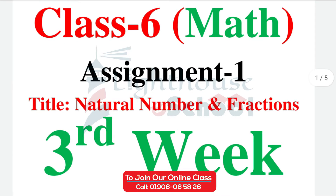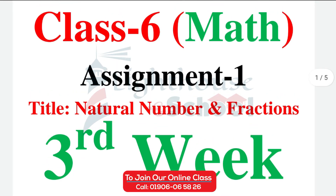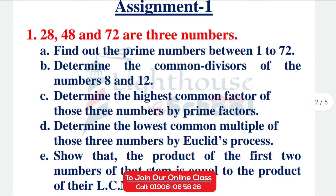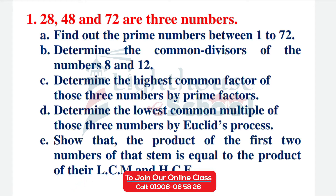In 2013, we have a number of natural numbers and fractions. Our question involves 28, 48, and 72 as the three numbers. Part A: Find the prime numbers between 1 and 72. Part B: Determine the common divisors of the numbers 8 and 12. Part C: Determine the highest common factor of those three numbers by prime factors.